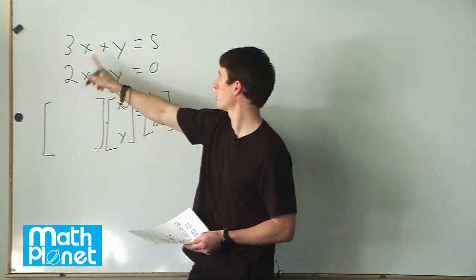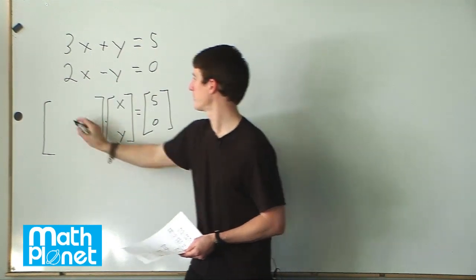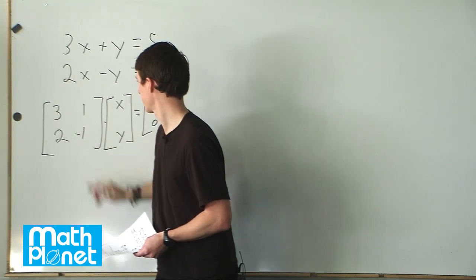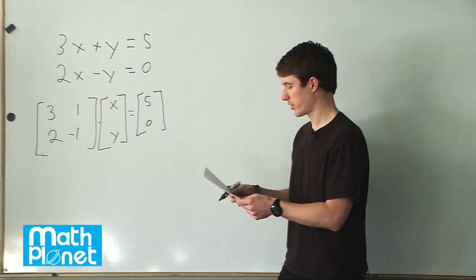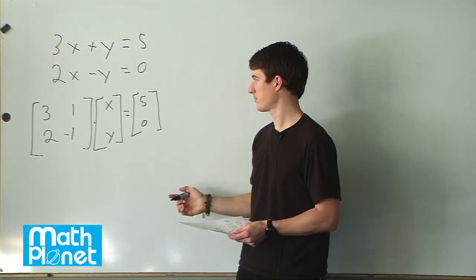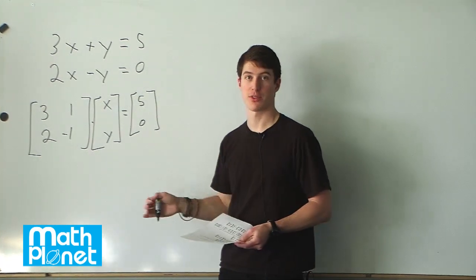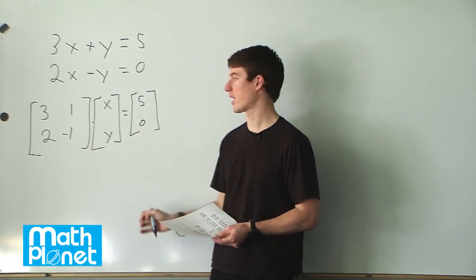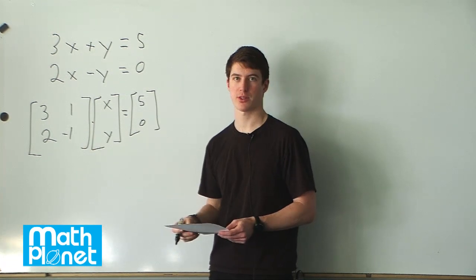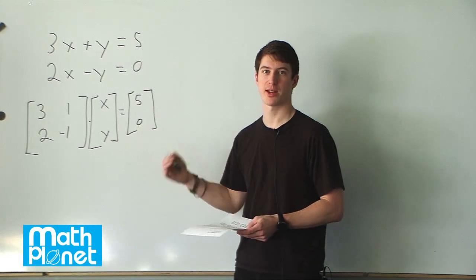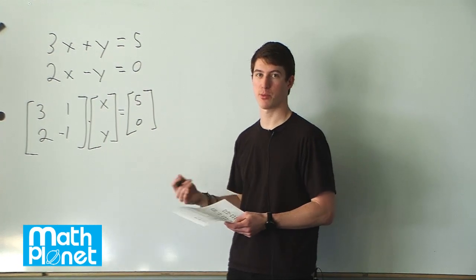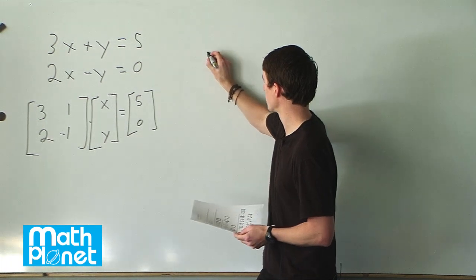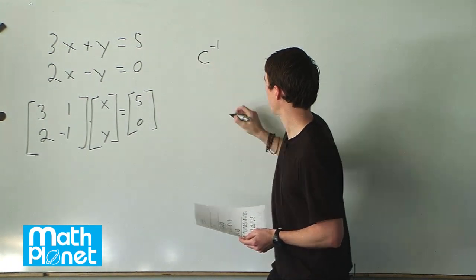So what we have is 3 and 1, and 2 and negative 1. Then what we want to do is find the coefficient matrix using the formula for it. We're going to take this equation, multiply both sides — left-hand side and right-hand side — by the coefficient matrix, and then we can simplify down to the identity matrix after we multiply, and then we can see what x and y are.